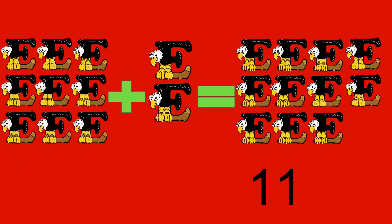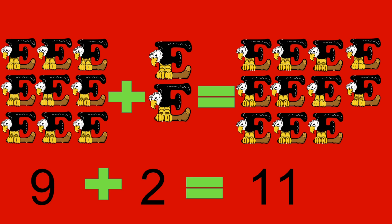9 eagles plus 2 eagles equals 11 eagles. 9 plus 2 equals 11.